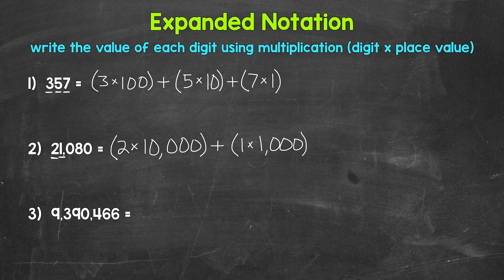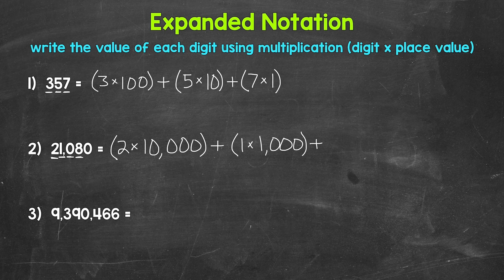This 1 has a value of 1,000, one group of 1,000. Plus, and then next we have a 0 in the hundreds place. This 0 tells us that the number doesn't have any hundreds, so we don't have a value to show here — we don't have a value to write for the hundreds place. So we can move to the next digit. That's this 8 right here. We have an 8, and that 8 is in the tens place, so times 10.